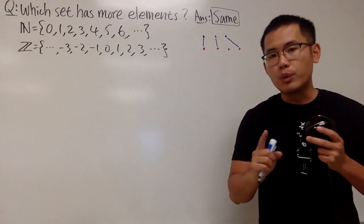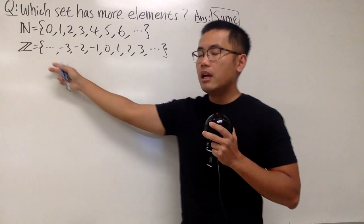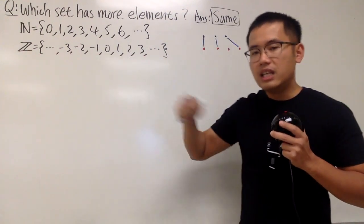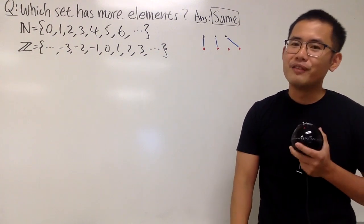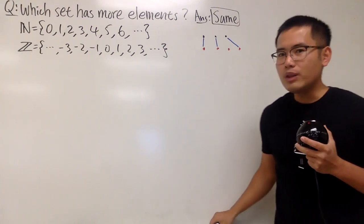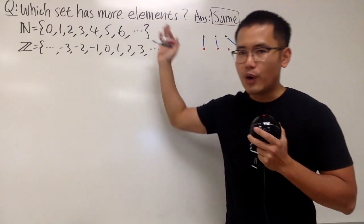And that's exactly what we'll do. If we can make a connection between the elements right here for the first set and the elements for the second set, if we can just connect them, then they do have the same number of elements. And that's called the one-to-one correspondence. We can also say we need to find a bijection from one to the other.